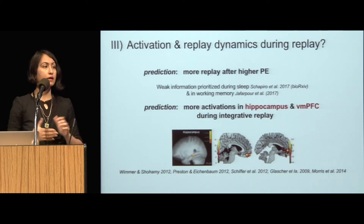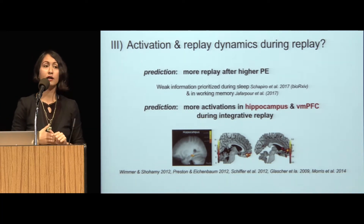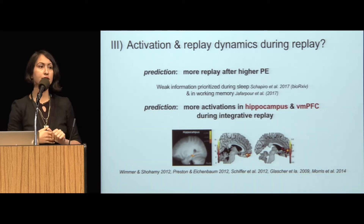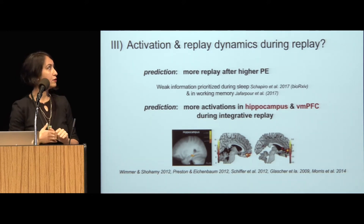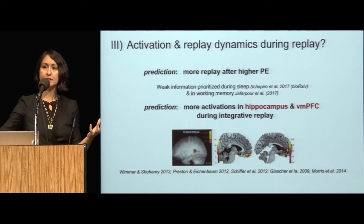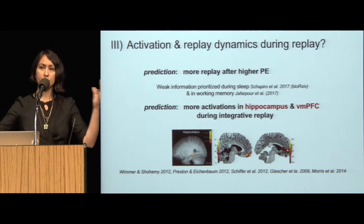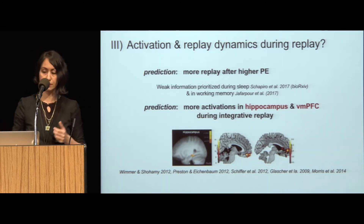There are some other side predictions. For instance, we would expect more replay after higher prediction errors if the account I just told you is the case, and there is some indirect evidence from some work that has recently been coming out. Also, we would predict that there would be more hippocampus and more ventromedial prefrontal cortex involvement in the integration process — regions that are often involved in memory integration processes.